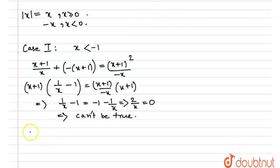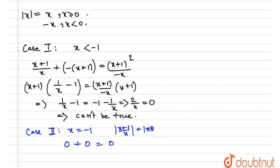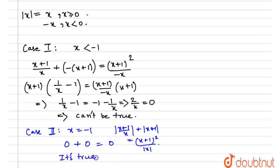Now let us take the case when x = -1. When x = -1, the equation becomes |0/(-1)| + |0| = 0²/|-1|, that is 0 + 0 = 0, which is true. So for x = -1 it is true, and x = -1 is a solution.